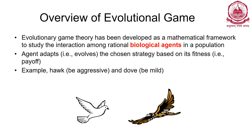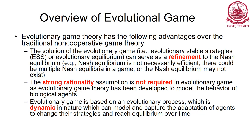If two hawks interact for food, they will fight and hurt each other at a cost, and then finally share the food. Whereas if two doves interact, they will simply start sharing the food without any fight.